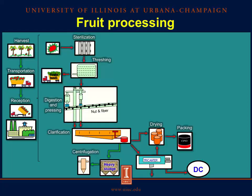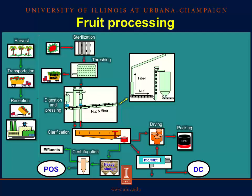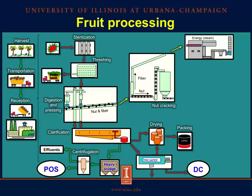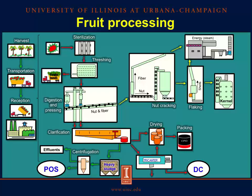The heavy sludge is then centrifuged and the effluents are separated from the solid part. The solid portion is considered palm oil sludge, our second byproduct. In terms of the pressed cake, nut and fiber are separated and the fiber is used as a source of energy in the factory. The nut is cracked to reduce particle size and the shells are removed by flaking. Shells are also used as a source of energy in the factory. Then the kernel is finally obtained, which undergoes steam conditioning before it is stored.